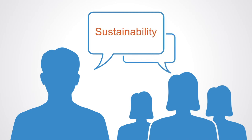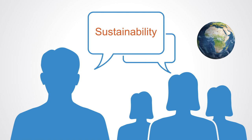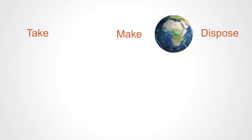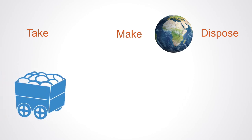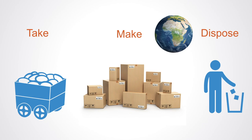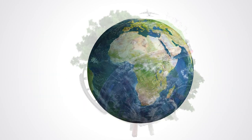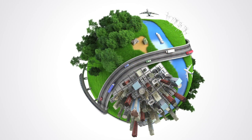Talk of sustainability is everywhere today, and along with it a growing awareness of the linear model of our existing economy. This linear economic model is captured in the popular description of the economy as a process of take, make, and dispose. We take natural resources from our environment, produce a product, and push it out to end users who then dispose of it. This used to not be such a problem, however, as the economy has grown and reached planetary limits, inputs are appearing more limited and outputs have become increasingly detrimental to ecosystems.